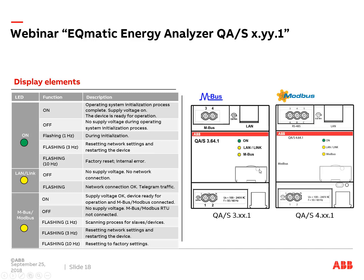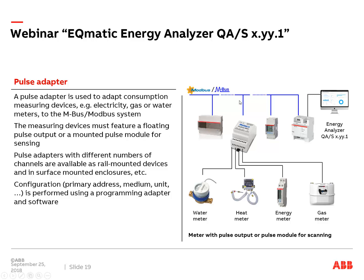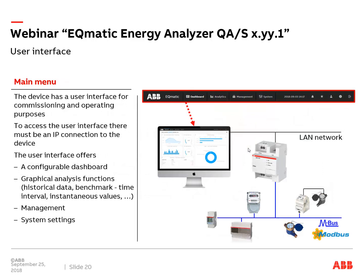A pulse adapter is a device connected to MBUS or Modbus with some inputs. You can connect devices with pulse output — like water meters, heat meters, or gas meters — and convert their pulses into MBUS or Modbus protocol. This is not an ABB device; it's a third-party product. You can search Google for 'pulse adapter MBUS or Modbus' to find different manufacturers.